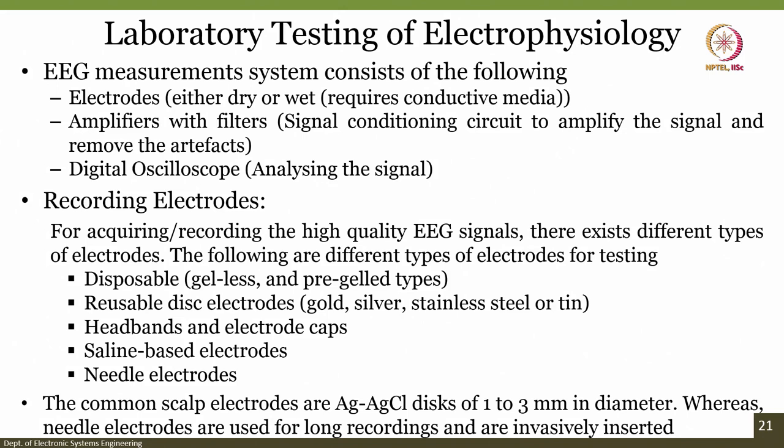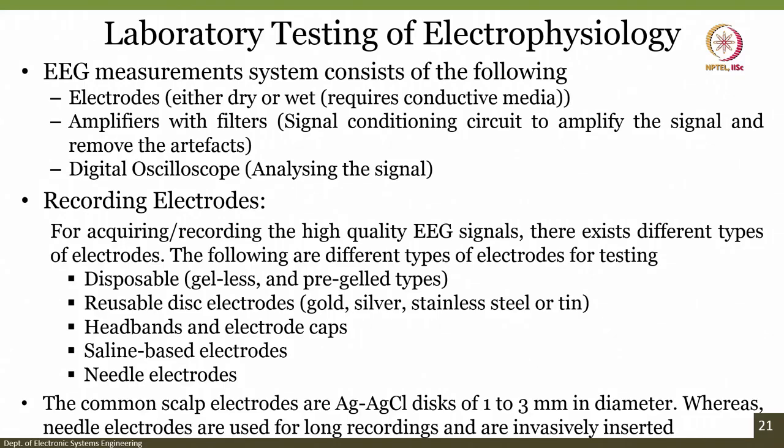If you want to do a laboratory testing of electrophysiology, the EEG measurement system consists of the following. First are electrodes — either dry or wet. Wet electrodes require a conductive media gel to improve the impedance. We also require amplifiers and filters: to amplify the signal because it is of very low amplitude, and to remove artifacts we require filters. Finally, you require a digital oscilloscope (DSO) for analyzing the signal in the laboratory environment.